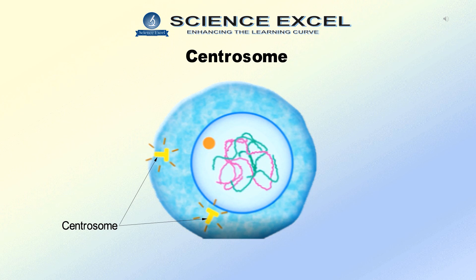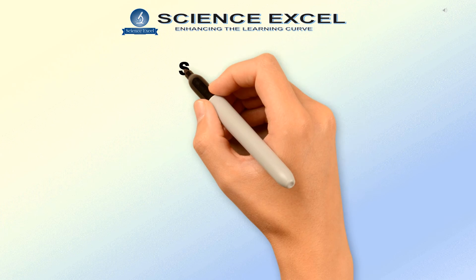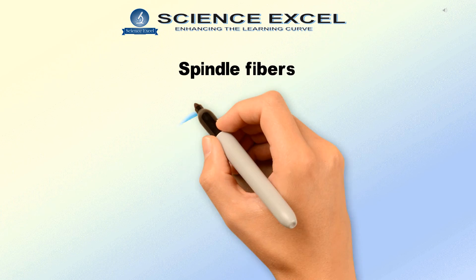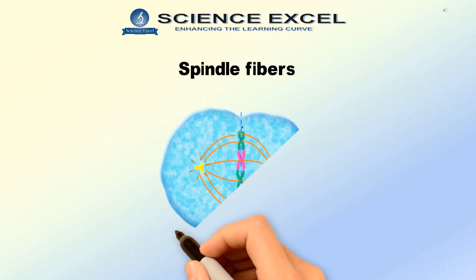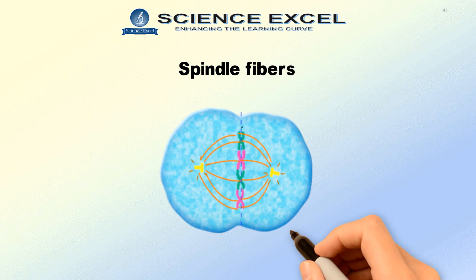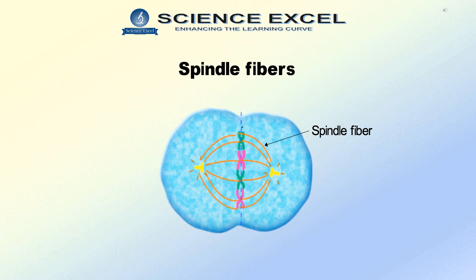There is one more term we need to know: the spindle fibre. Spindle fibres are protein structures which consist of microtubules that form out of the centrosome. They are formed near the poles of the dividing cells.